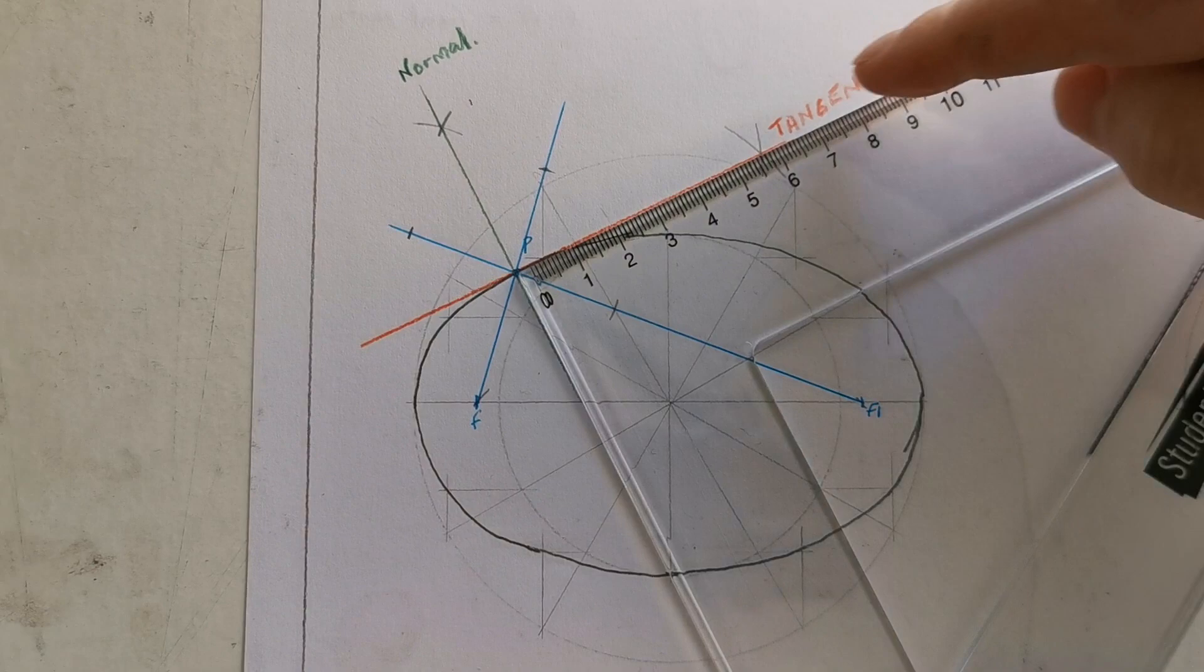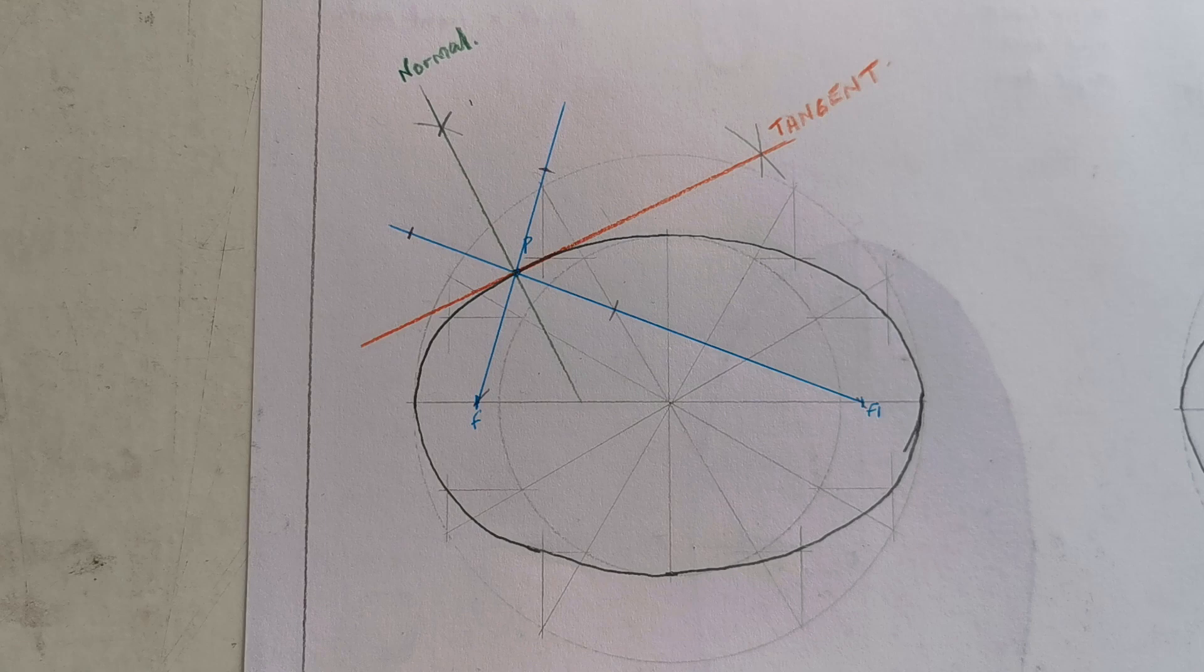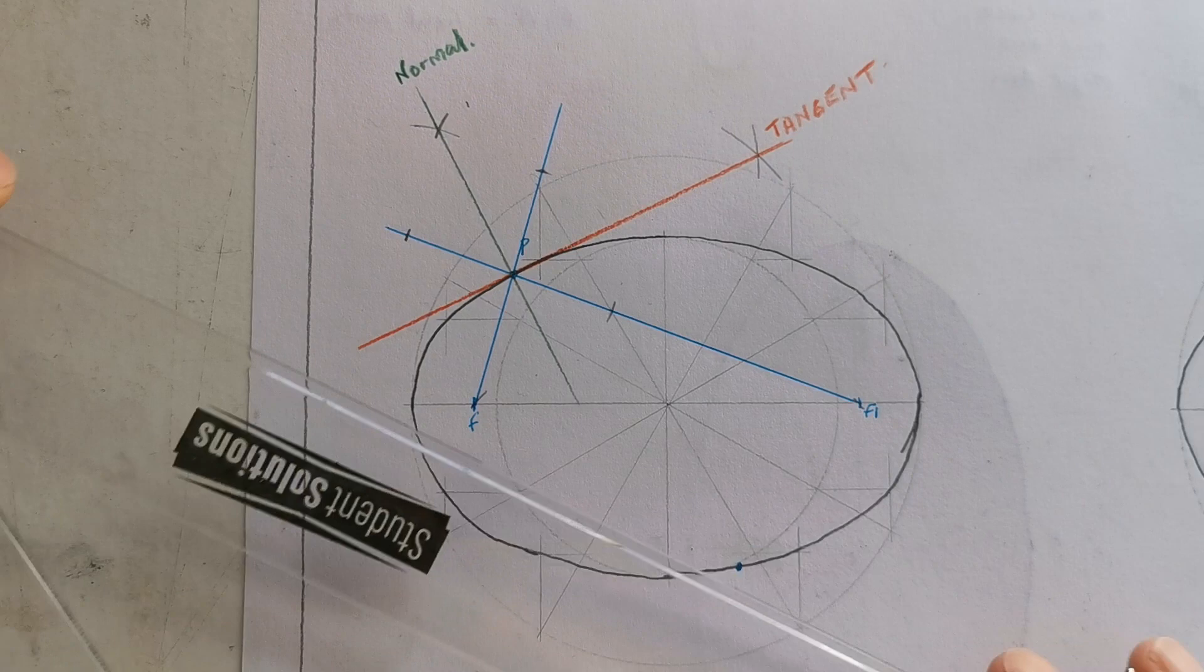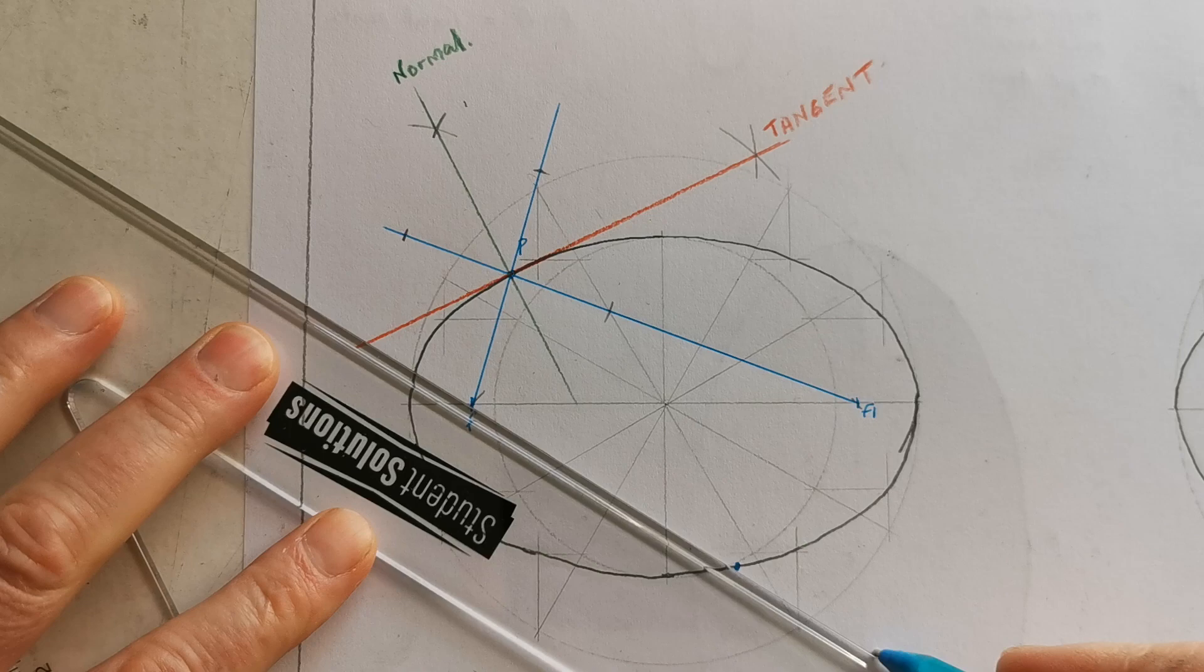That's called a normal, and the normal and the tangent make an angle of 90 degrees to each other—they're perpendicular. So that is drawing a tangent to an ellipse, and it is good practice when you're doing it to just use the ellipse and do another one. I'll just do a second tangent down below. Again, the same thing: join to the focals.